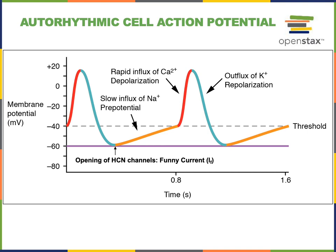Here we see a graph of the autorhythmic cell action potential. The orange line represents the region known as the pre-potential phase, or pacemaker potential. This phase determines the heart rate in autorhythmic cells of the SA node — increasing the slope of the pacemaker potential leads to an increased heart rate because the membrane potential reaches threshold faster.